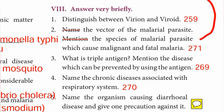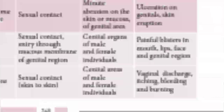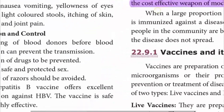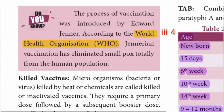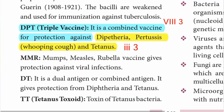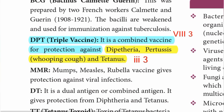Third one — what is triple antigen? Mention the diseases that can be prevented by using it. Triple antigen is DPT, a combined vaccine for protection against Diphtheria, Pertussis (whooping cough), and Tetanus.